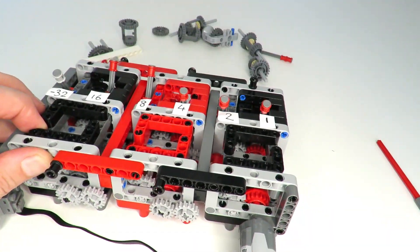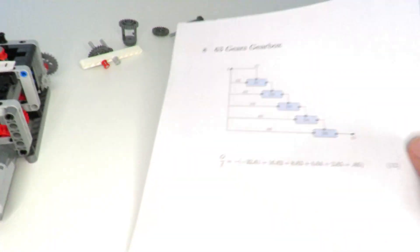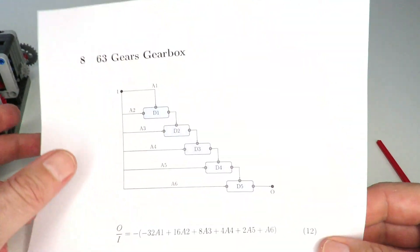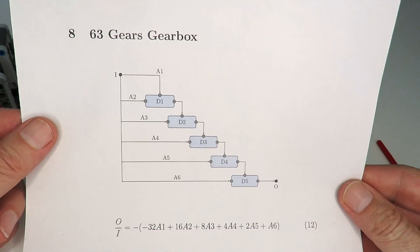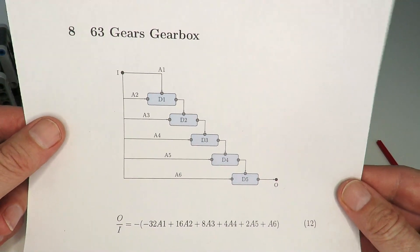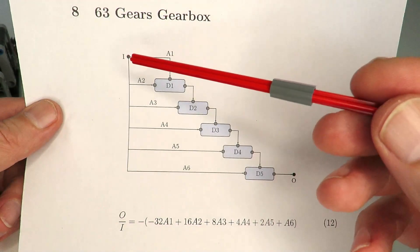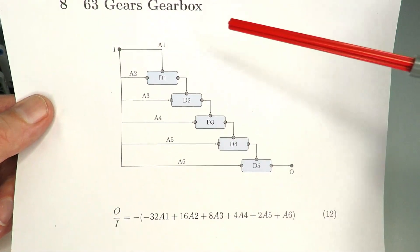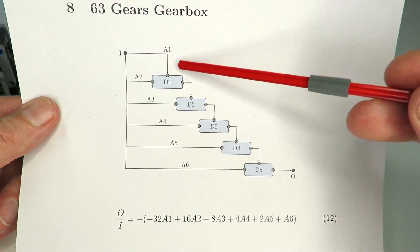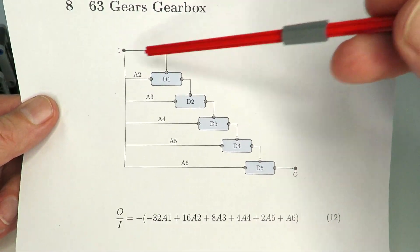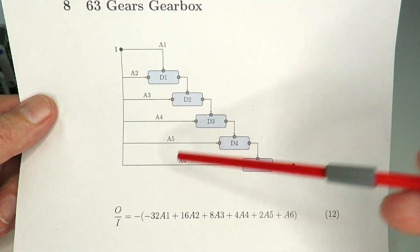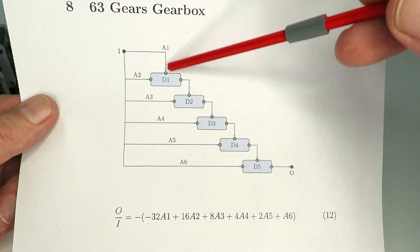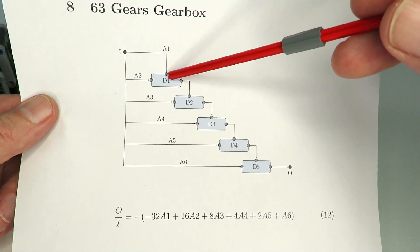Now if you're interested in the theory behind this design I have an explanation. What I've got here is a diagram of the actual gearing mechanism. Over here on the left we've got the input axle represented by a letter I. This connects to each of the five differentials through the selectors A1 to A6. So if A1 is selected, that means input connects like this.